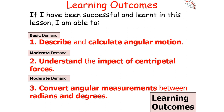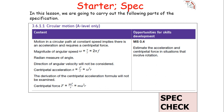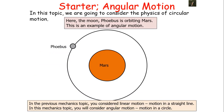We are going to try to describe and calculate angular motion, understand the impacts of centripetal forces, and look at how you can convert angular measurements between radians and degrees. This links into the circular motion section of the AQA A-level physics specification, which is on paper 1 but is not found on the AS specification. In this topic we're going to consider the physics of circular motion.